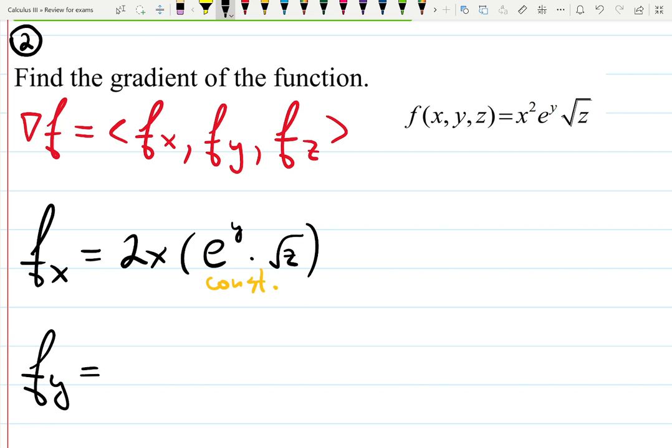Now e to the y is the only variable here. Derivative of e to the y is e to the y, and I can copy everything else because it's a constant multiplied by a variable.